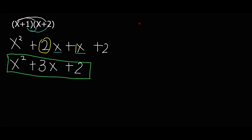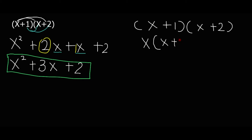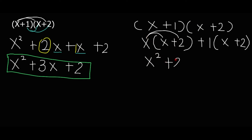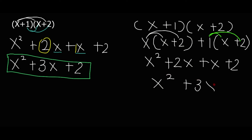This is our answer. Now the second method: x times x is x squared, x times 2 is 2x, and then 1 times x is x and 1 times 2 is 2. From here I add like terms: x squared plus 3x plus 2. It's all up to you which method you choose.